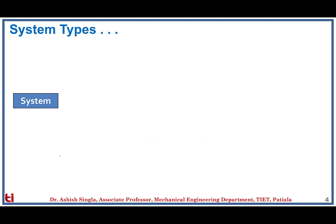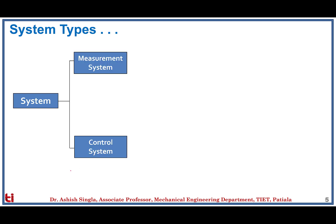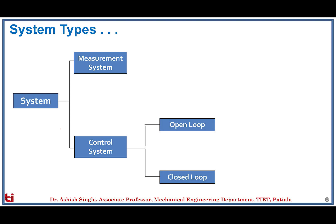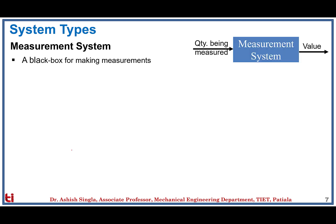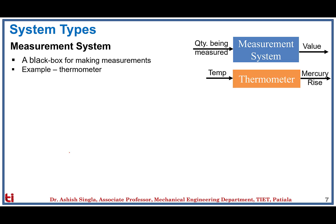Systems are broadly classified into two types: measurement systems and control systems. The control system is further classified as open loop and closed loop. A measurement system is like a black box for making measurements — on the input side you have the quantity being measured and on the output side you have the actual value displayed. For example, with a thermometer, the input is the body whose temperature needs to be measured, and the output is the display showing the mercury level rise.